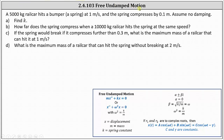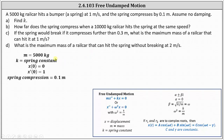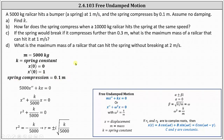Because we have free undamped motion, we can model the situation using the differential equation mx'' + kx = 0, where m is the mass and k is the spring constant. The given information: mass m = 5,000 kilograms, k is the spring constant, at time zero we have zero displacement, x(0) = 0, the initial velocity is one meter per second, x'(0) = 1, and the spring compression equals 0.1 meters. The differential equation is 5,000x'' + kx = 0.